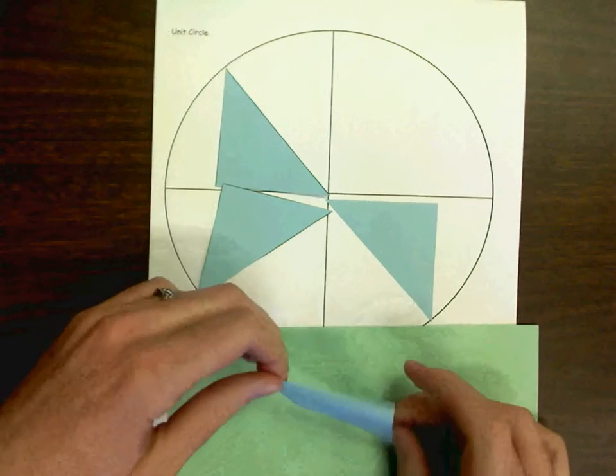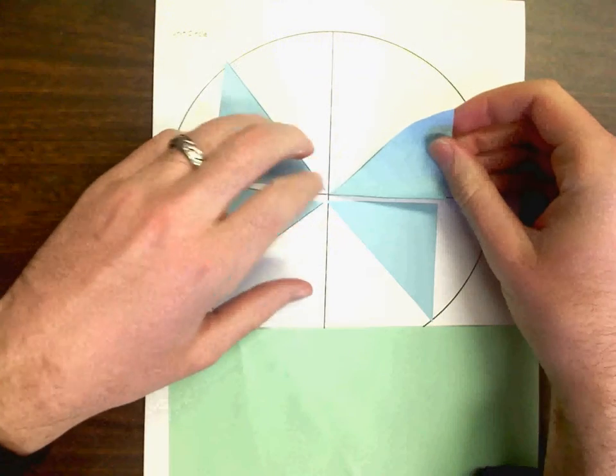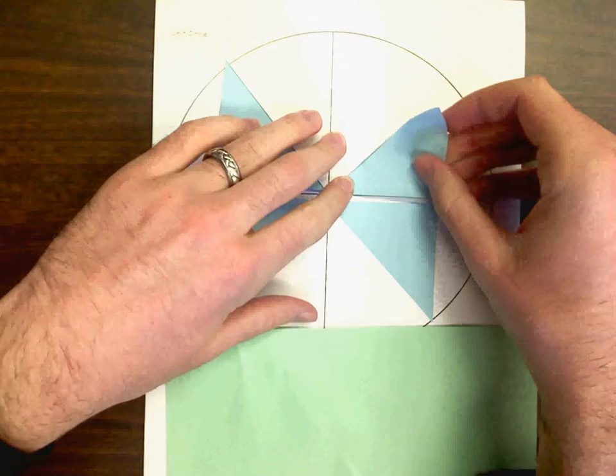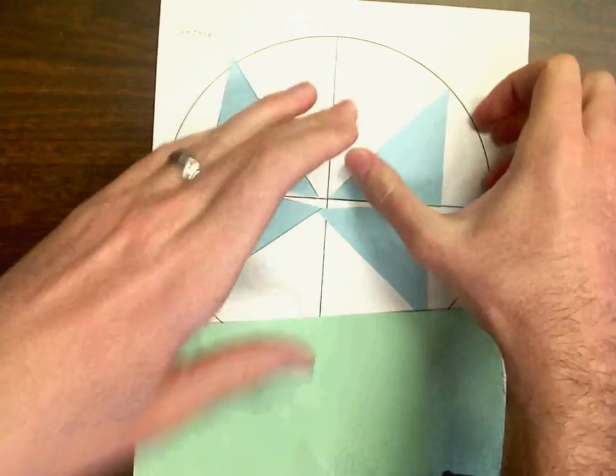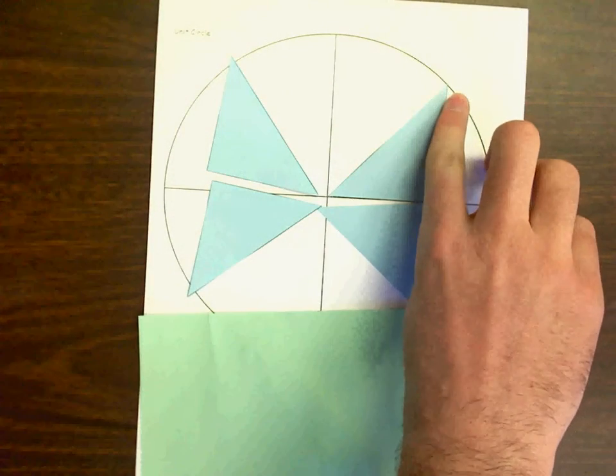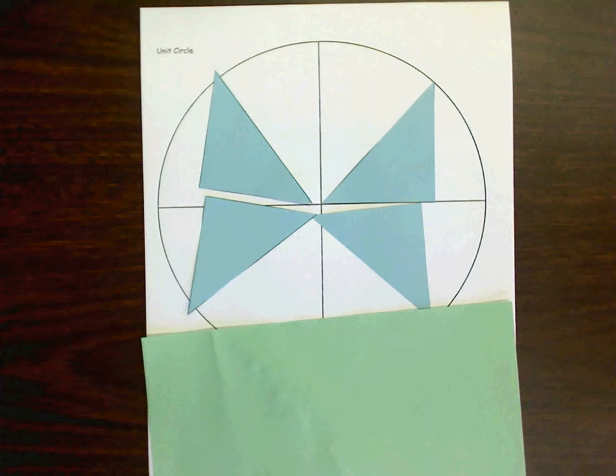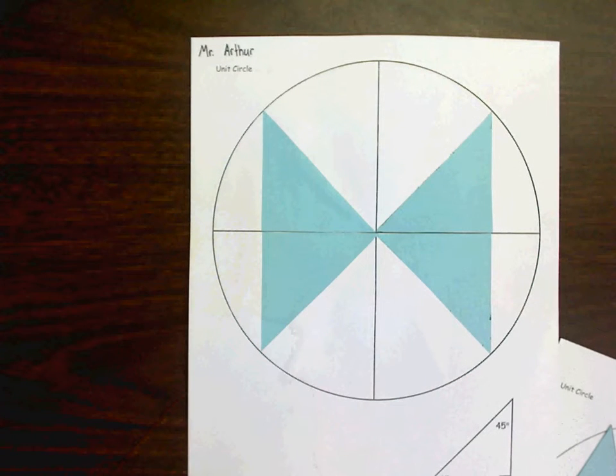And then, you can just flip it back into place. You want to line up the point at the origin along the line. And, depending on how accurately you cut, this point should just be touching the circle. Occasionally, they overlap a little bit, but that's not a big deal. Alright, you'll repeat the same process for all four blue triangles until you end up with something like this. Ta-da! TIE fighter. Go watch it.